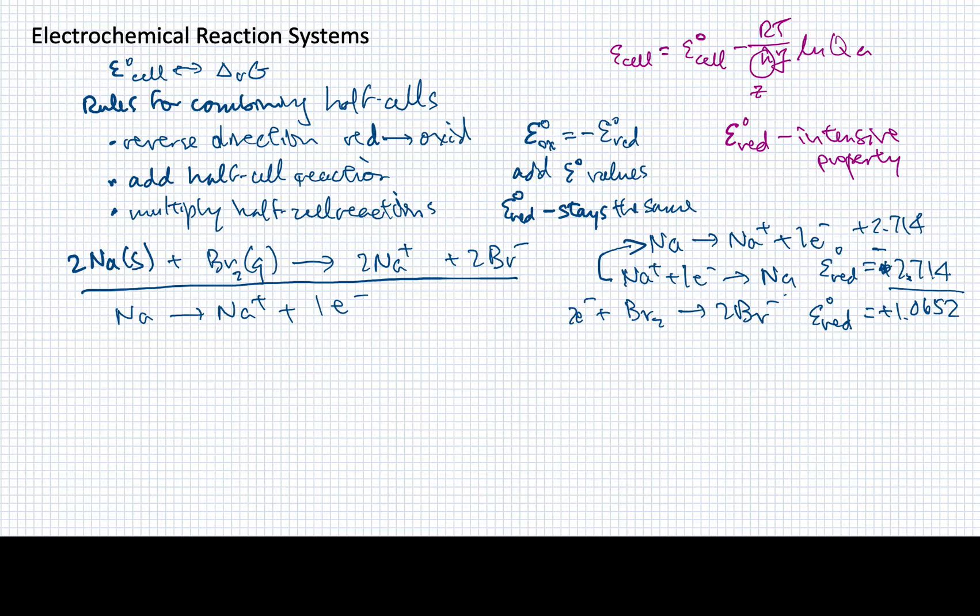when I add the oxidation version of sodium and I add the reduction version of bromine, I'll have plus 2.714 and plus 1.0652. So when I add these two up, I'll end up with 3.779 volts as the cumulative cell potential for putting these two half-cells together.